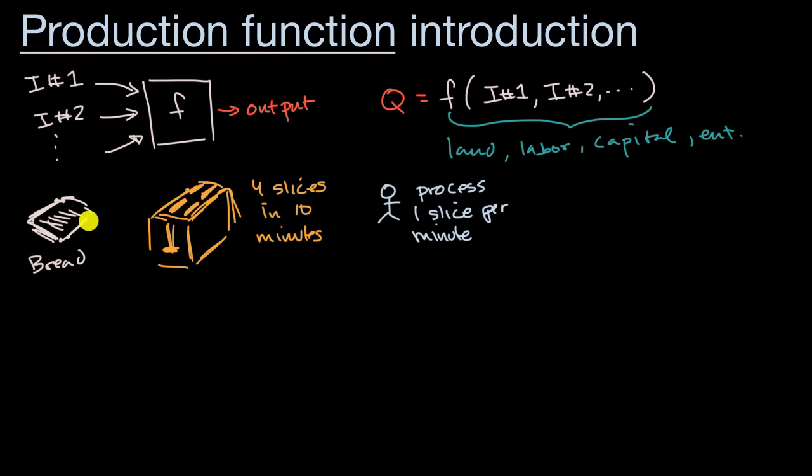Now based on this, if these are really all of the three inputs into producing the output, toasted pieces of bread, we could try to construct a production function here. So let's say the output is going to be the number of slices of toasted bread. And it's going to be equal to, I'm going to make our production function as being the minimum of several values. And what you're going to see is going to be based on what's going to be our rate limiting factor.